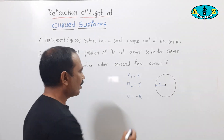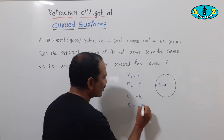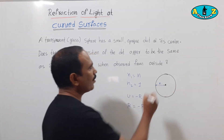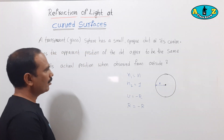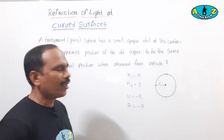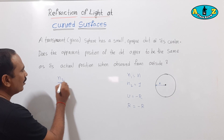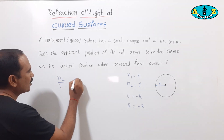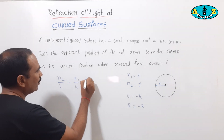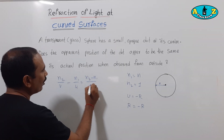The radius of curvature R is also minus r. Already we know the curved surface formula: n2 by v minus n1 by u equals n2 minus n1 by R.